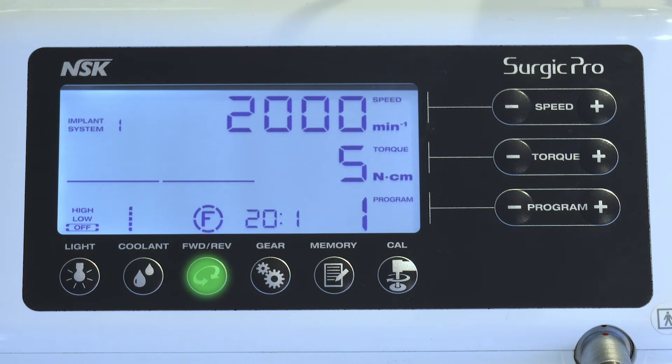Press the forward or reverse key to select the direction of rotation. Press the gear key to select the correct gear ratio of the handpiece you use. Press the speed key to set the required max operating speed by pressing plus or minus. Press the torque key to select the upper limit of the torque range.